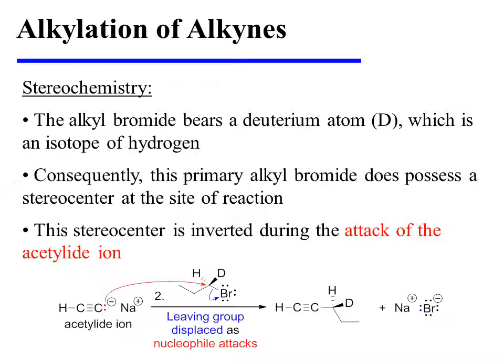The following SN2 reaction highlights this point. In this instance, the alkyl bromide bears a deuterium atom, which is an isotope of hydrogen. From the perspective of chemical reactivity, deuterium behaves nearly identically to hydrogen. However, since it is an isotope of hydrogen, it counts as a separate group. Therefore, this reactive electrophilic carbon is a stereocenter. During the SN2 reaction, the acetylide ion attacks the electrophilic carbon and displaces bromide, inverting that stereocenter.